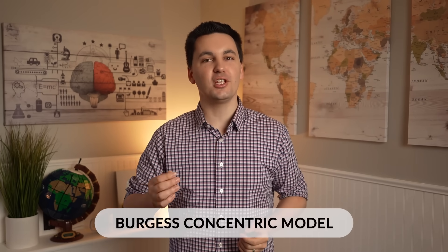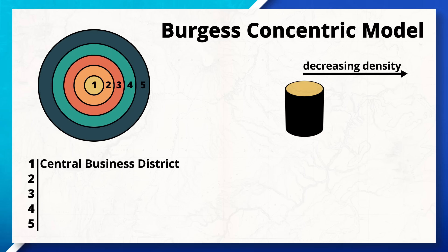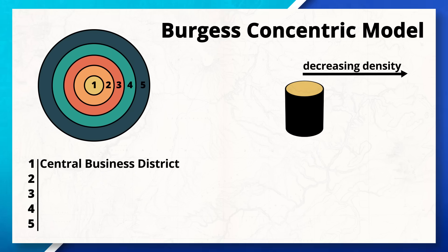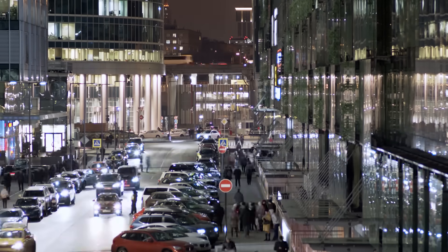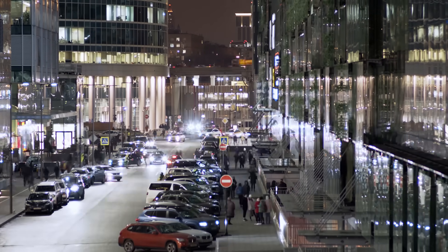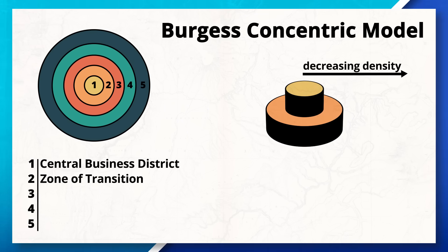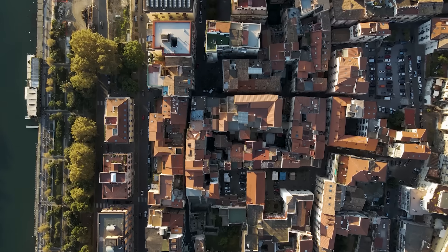Now that we've reviewed the bid-rent theory, the time has come to move into the different urban geography models. Starting with the Burgess Concentric Model, which was based on the city of Chicago in the 1920s. In the center, we have the CBD, which traditionally consists of different businesses and public and private services. The CBD is surrounded by older homes, with the newest development being located farthest away from the central business district. Lower-income residents are typically found in the zone of transition, along with different industries as well.